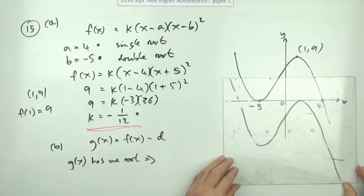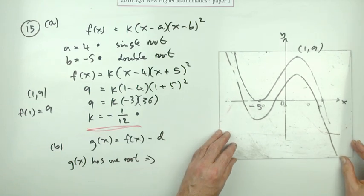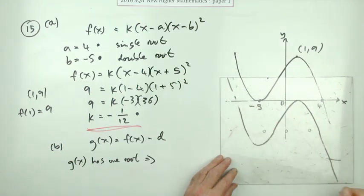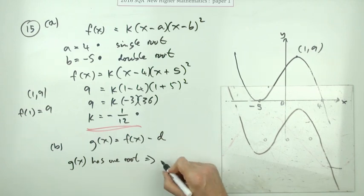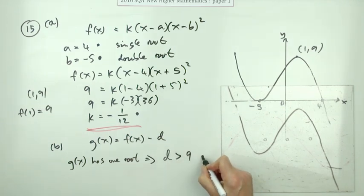So how far down did you have to go? Well you dropped it nine to reach the axis, but it's still got two there, so anything beyond nine will do. So d is greater than nine, and there's your last mark.